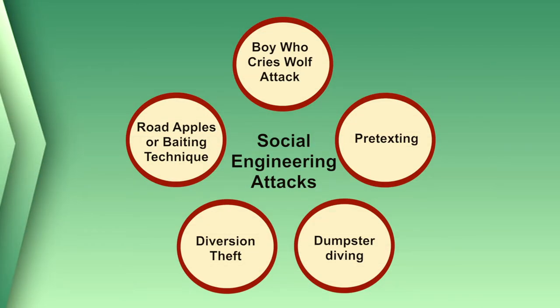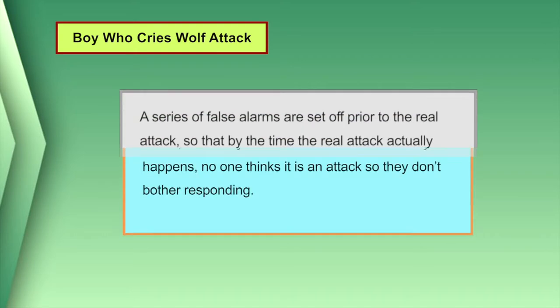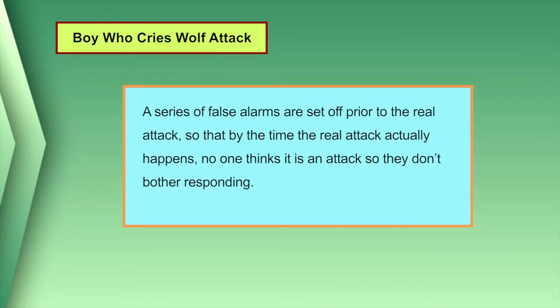Apart from the techniques discussed, there are other popular methods used by attackers. The first is the boy who cries wolf attack. Like in the classic fable, a series of false alarms are set off prior to the real attack, so that by the time the real attack happens no one thinks it is an attack and they don't bother responding. In a way, they have been socially engineered into thinking the attack isn't real.